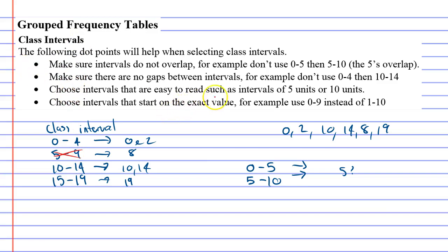Third step says choose intervals that are easy to read, such as intervals of 5 units or 10 units. What that's saying is don't pick intervals like 0 to 3 or 0 to 8, really odd intervals. You want intervals of 5 or 10 as much as possible.